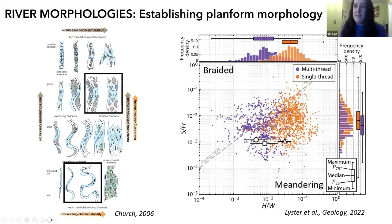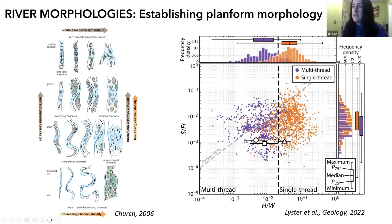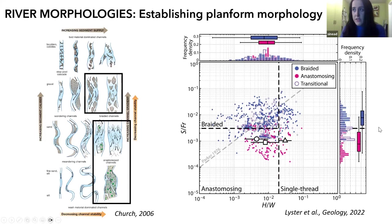Going back to the point about how we tend to separate everything into braided or meandering and miss out on a whole other range of planforms, I decided to break this down further. Instead of just splitting everything into single-thread or multi-thread rivers, I split my multi-thread river data into two end members: braided and anastomosing rivers.